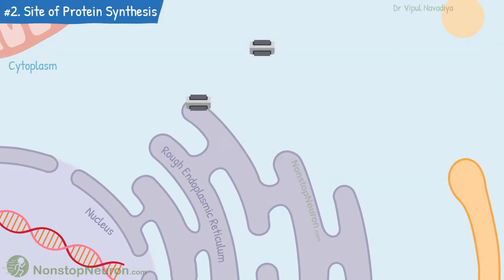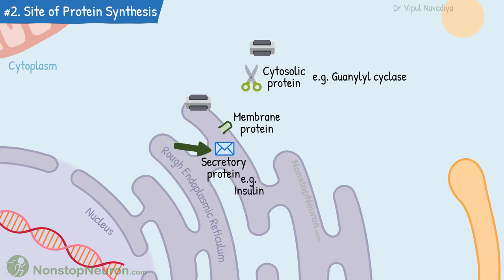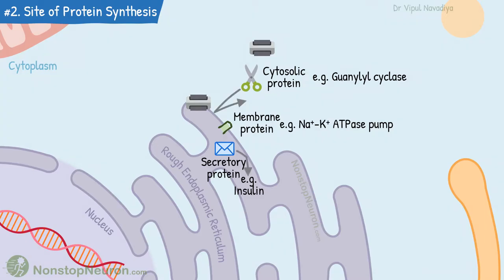The next point is regarding the site of protein synthesis. The proteins required in the cytosol are synthesized in the cytosol — for example, cytosolic guanylyl cyclase. The secretory proteins and membrane proteins are synthesized on the rough endoplasmic reticulum. Secretory proteins enter the lumen of the rough endoplasmic reticulum — for example, insulin. Membrane proteins enter the membrane right when they are being synthesized — for example, the sodium-potassium ATPase pump. It's necessary to synthesize proteins at their respective places because once they are synthesized, they cannot enter or cross the lipid bilayer.